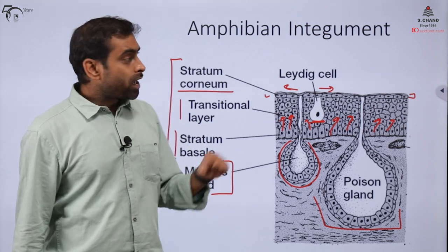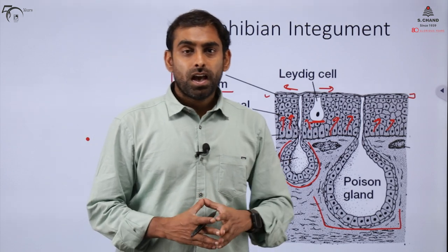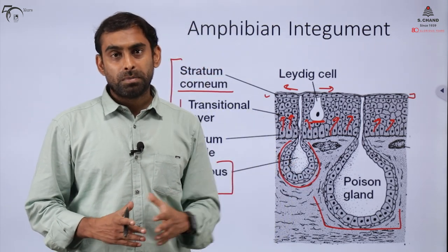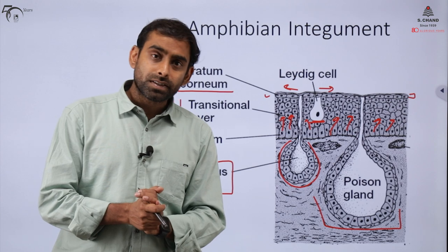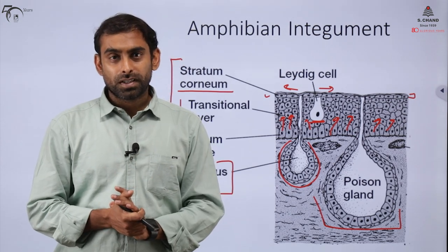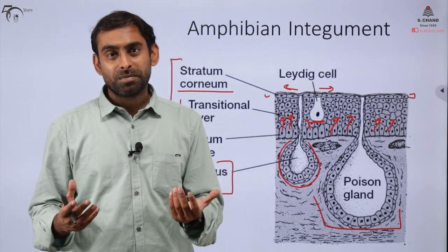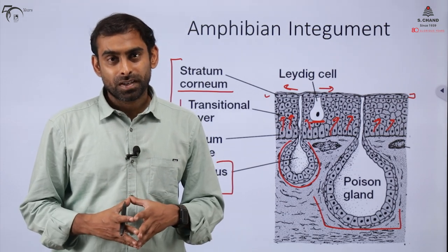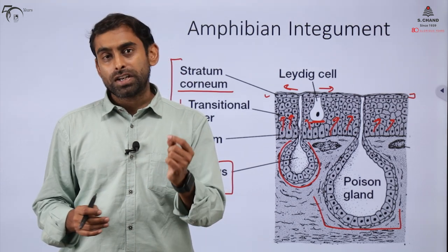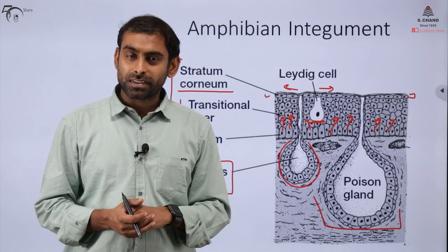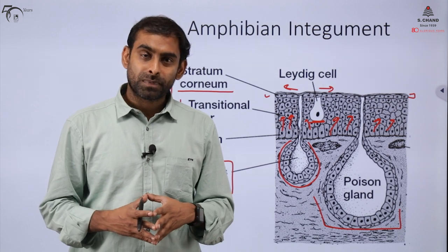From an evolutionary point of view, after amphibians come reptilians, aves, and mammals. Can you think of what is unique about avian skin compared to amphibian skin, or what distinguishes reptilian skin, or what complexities exist in our mammalian skin? Can you identify any distinct point that is present in our skin but not found in other organisms' skins?